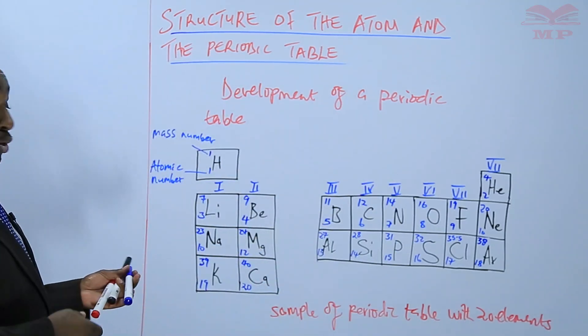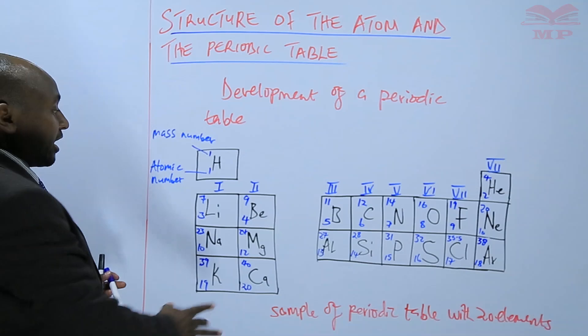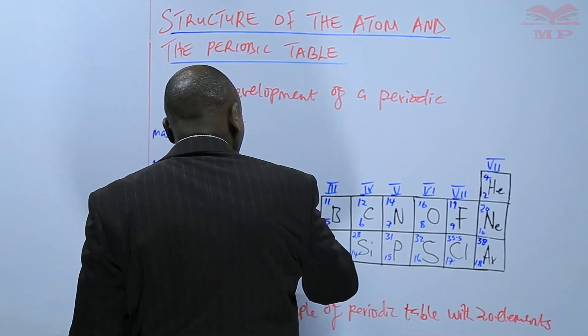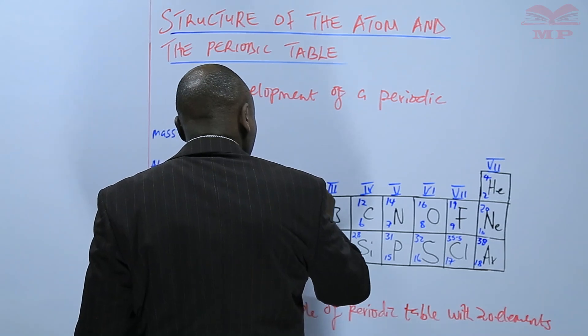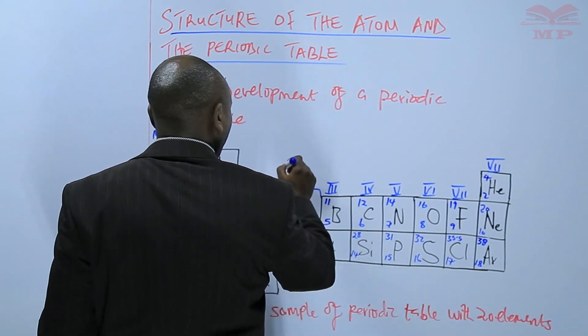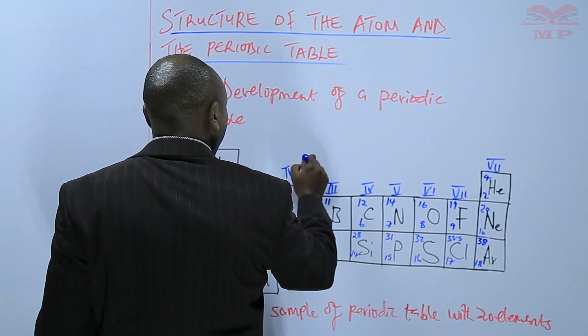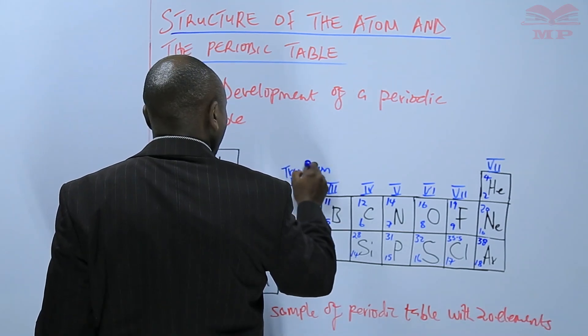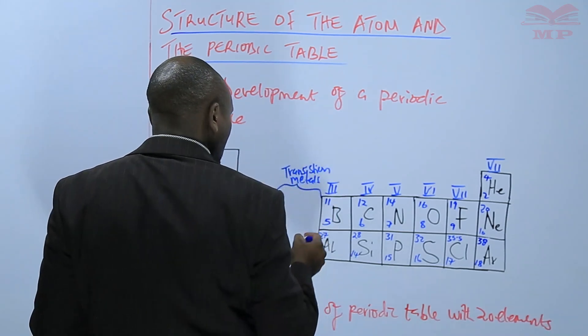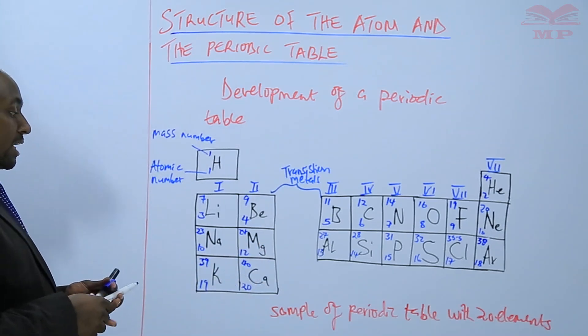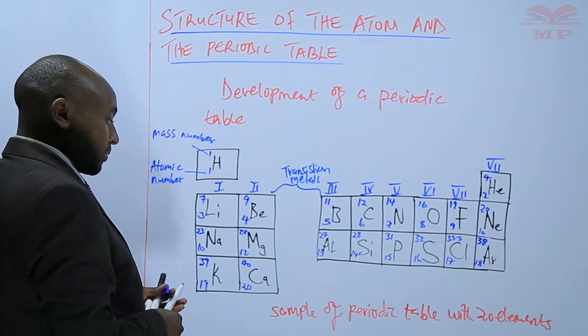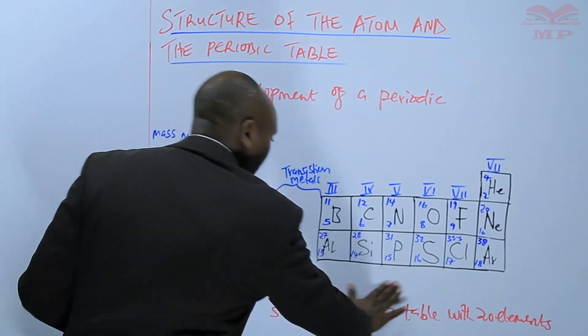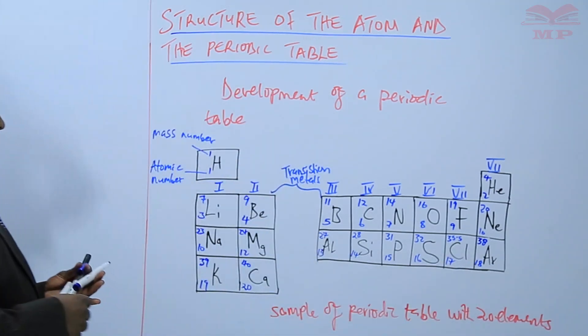Then in between group 2 and group 3 we have what we call transition metals, and those transition metals are not put in any particular group.